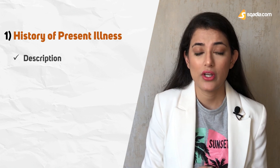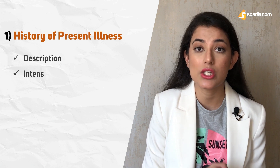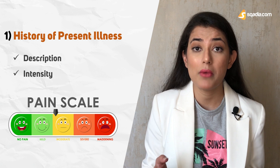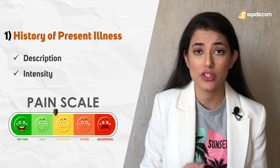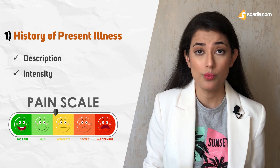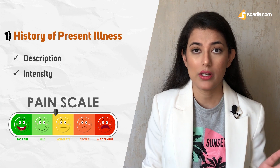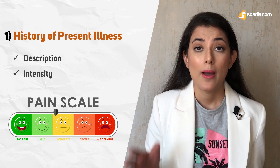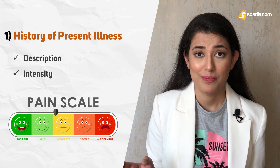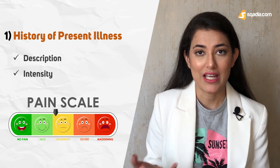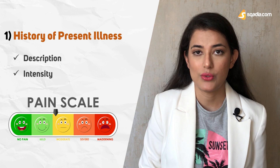The next area that the history of present illness assesses is the intensity of pain. For that, a numeric scale is used, and there are many. One such example is the graphic rating scale. It has two endpoints: one is no pain at all, and the other is pain as bad as it could be. Usually words such as mild, moderate, and severe are used, or digits are used.